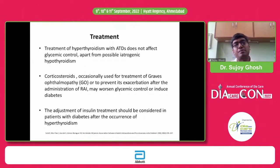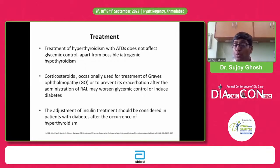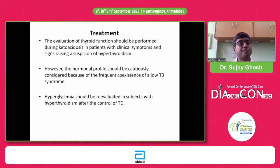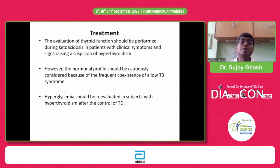With improvement of hyperthyroidism, blood glucose should come down. When you see sudden worsening of blood glucose in an individual, think of hyperthyroidism — either newly diagnosed or relapsed. Hyperthyroidism is one of the causes of ketosis. One of the causes of low T3 syndrome is diabetes, and hyperglycemia should be re-evaluated throughout the course of management of hyperthyroidism.